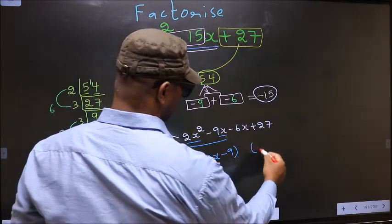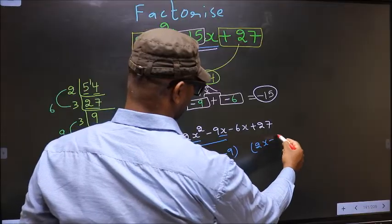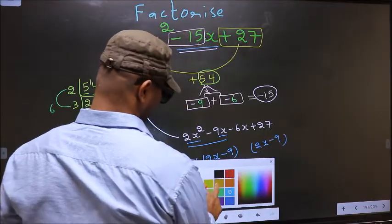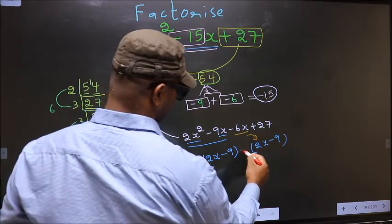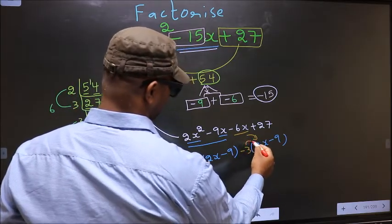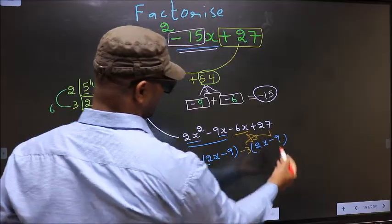Now whatever you got here, here also you should get the same thing. Now from this, 2x has gone inside. So outside you get minus 3. Even if you multiply and check, still you get the same thing.